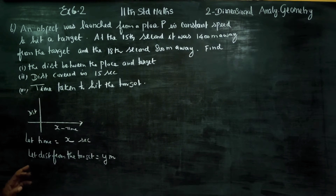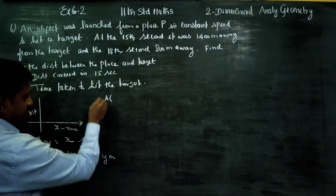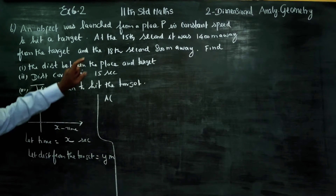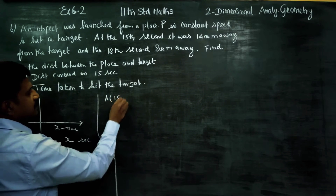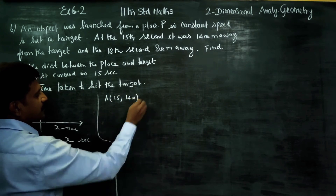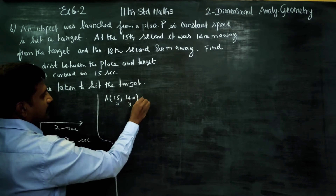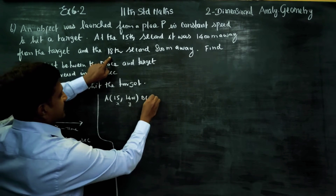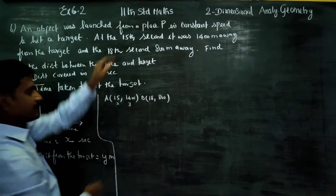The first point A is at the 15th second with 1400 meters from the target — so point A is (15, 1400). The second point B is at the 18th second with 800 meters from the target — so point B is (18, 800).